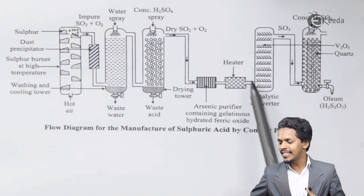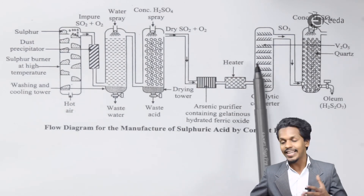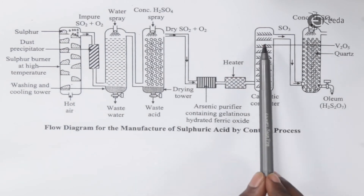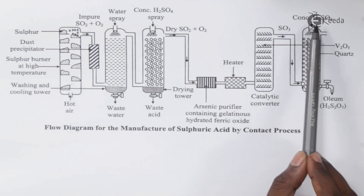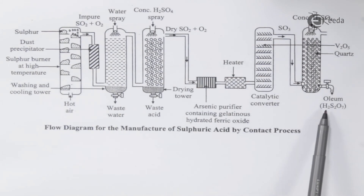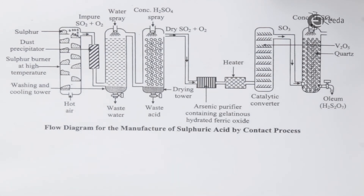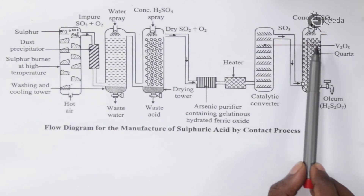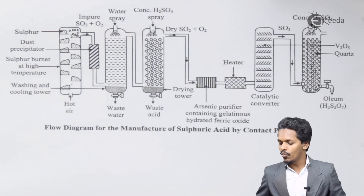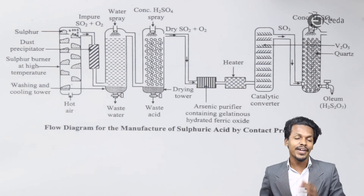The main part of the setup is the catalytic converter, where V₂O₅ is used as a catalyst and SO₂ is converted into SO₃. When SO₃ passes through the next chamber, concentrated H₂SO₄ is sprayed on it, producing H₂S₂O₇ — which is Oleum. On dilution of this Oleum, pure Sulfuric Acid is obtained. There is also a quartz chamber present to prepare Oleum in a very effective manner. This is the complete flow diagram of the preparation of Sulfuric Acid via the Contact Process.